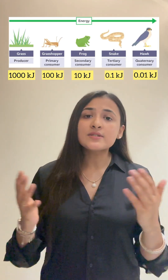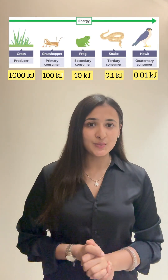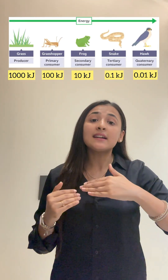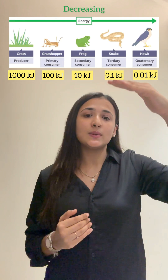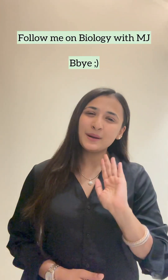So this was about the 10% law of energy transfer. As you can see, the energy levels are decreasing as we go to successive trophic levels. That was all about the 10% law of energy transfer. See you in the next video. Follow me on Biology with MJ. Bye-bye.